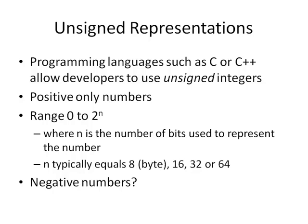Unsigned representations, which you can use in many programming languages such as C or C++, allow you to use binary values to represent positive numbers. You have a range of 0 to 2^n minus 1, where n is the number of bits used to represent the number. So with 8 bits, you get 2 to the power of 8, which is 256, minus 1. An unsigned 8-bit value can represent numbers between 0 and 255.